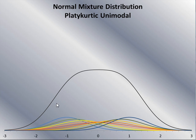We'll use a normal mixture distribution to understand negative kurtosis. In the middle, we have a red, very wide distribution — not extreme and very variable. The orange distributions are a little more extreme and less variable. The yellow, more extreme, less variable. Green, even more extreme and less variable. The blue distributions are the most extreme and least variable. Adding these on top of each other, you get a distribution that is thick in the middle and thin in the tails.